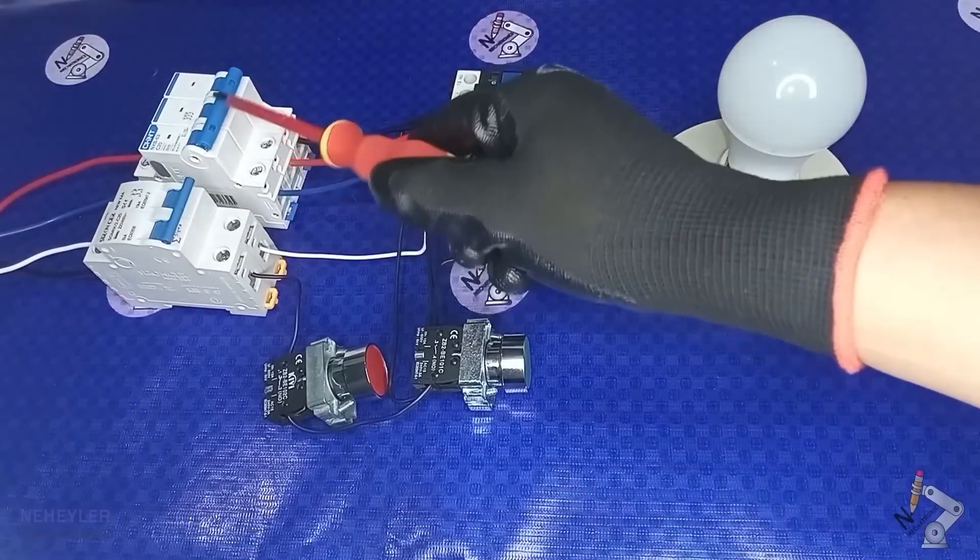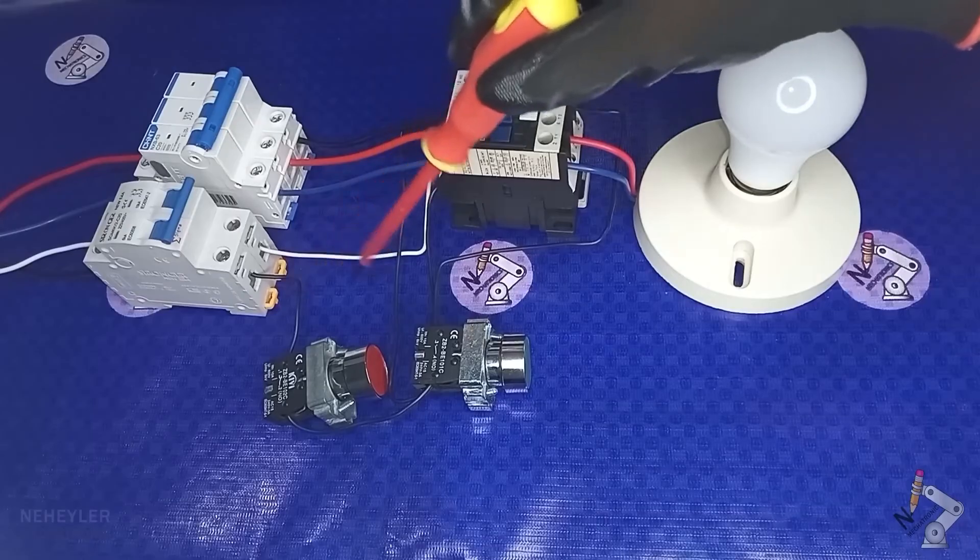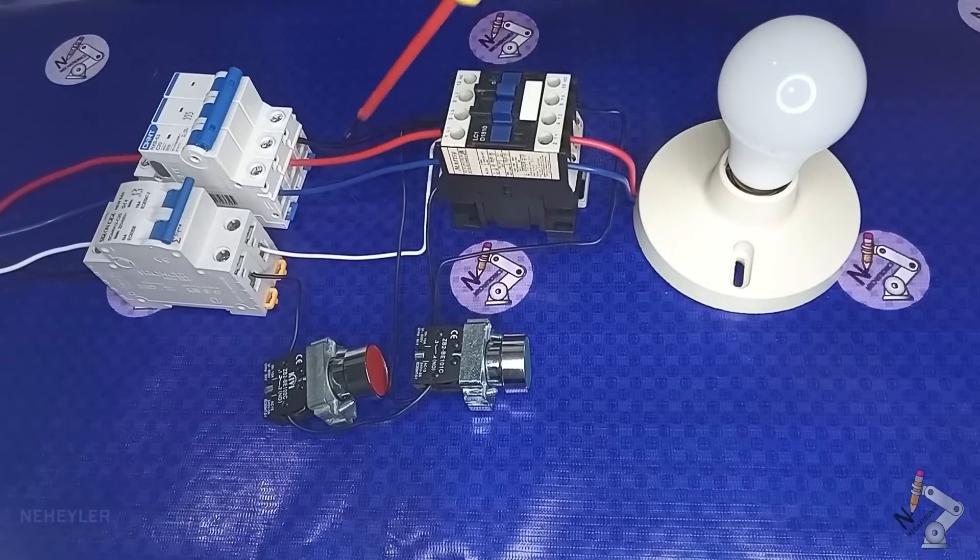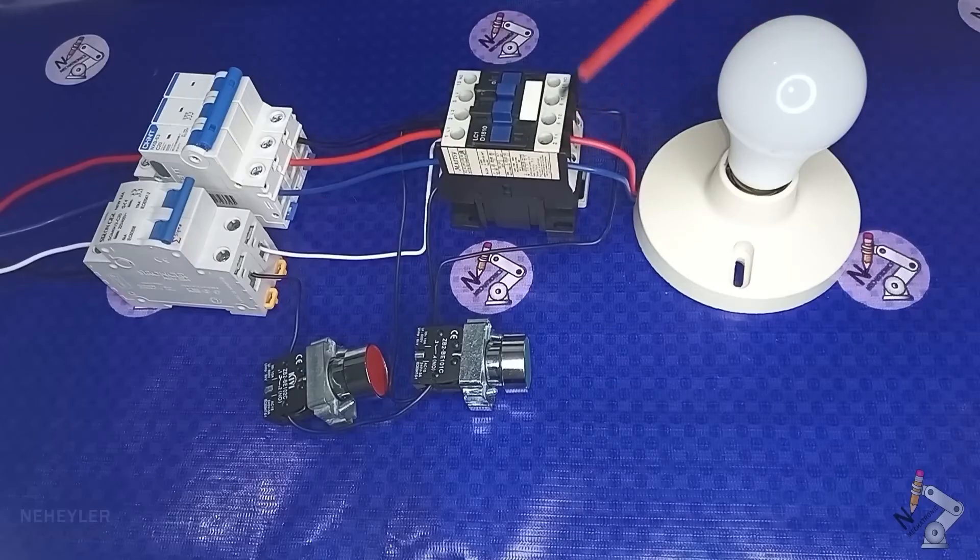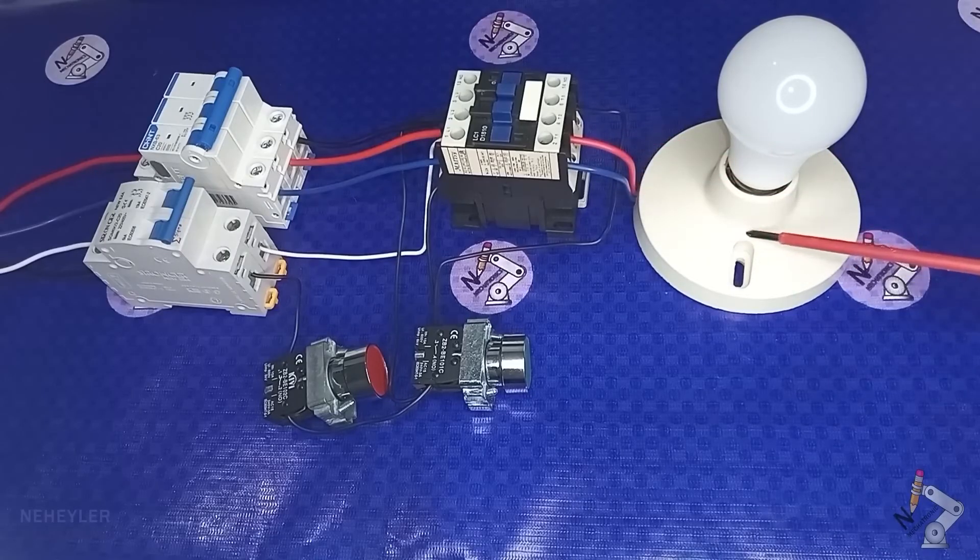On the other hand, we have the three-pole switch where the power cables are connected. These cables have a larger cross-section than the cables used for the control circuit, since a greater current will flow through them. In my case, I am going to test the operation with a light bulb. The voltage between the blue and red wires is 220 volts in alternating current.